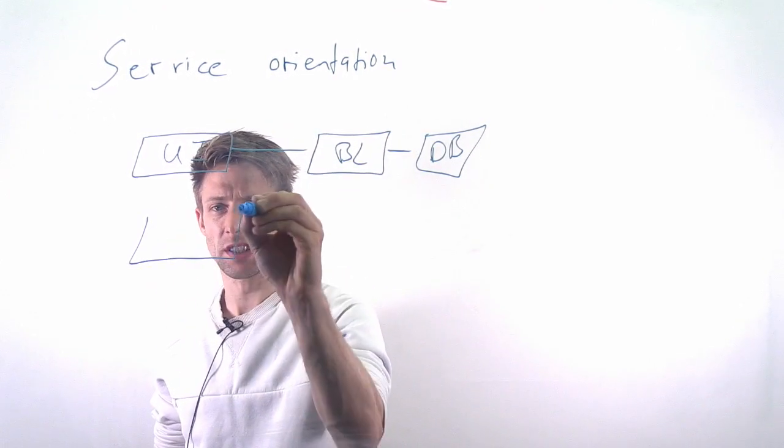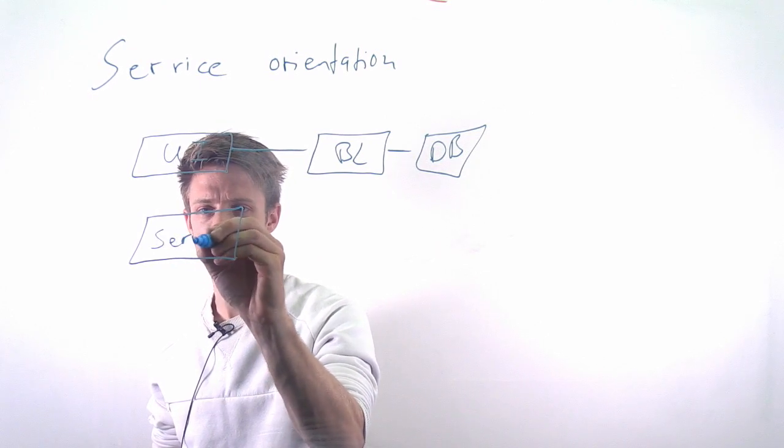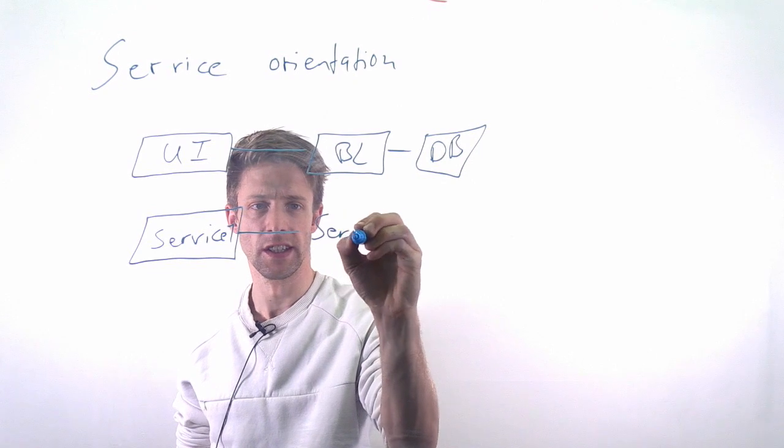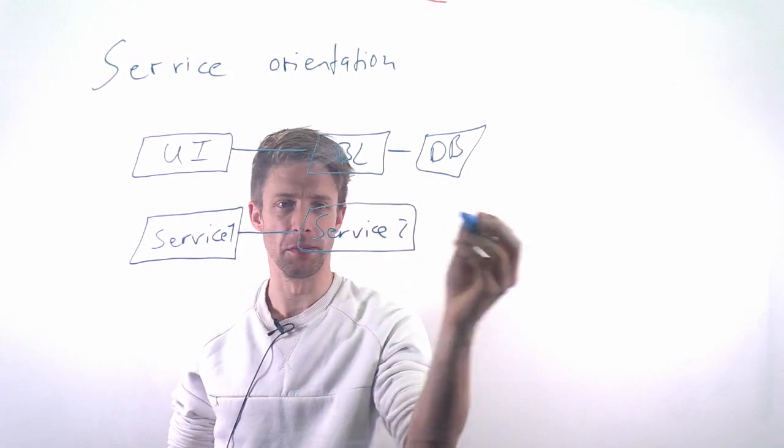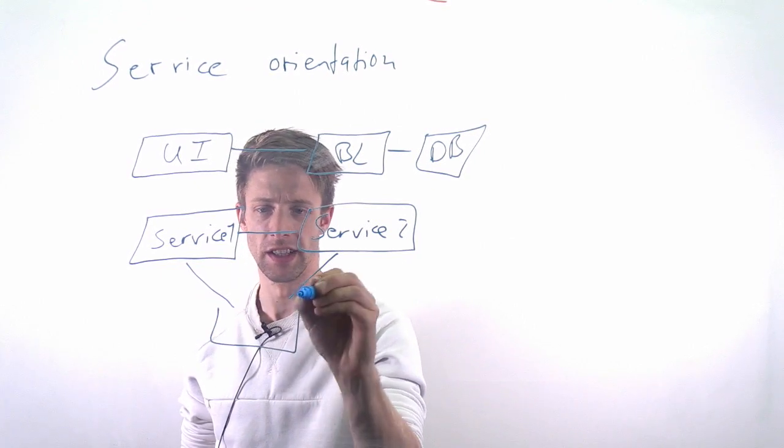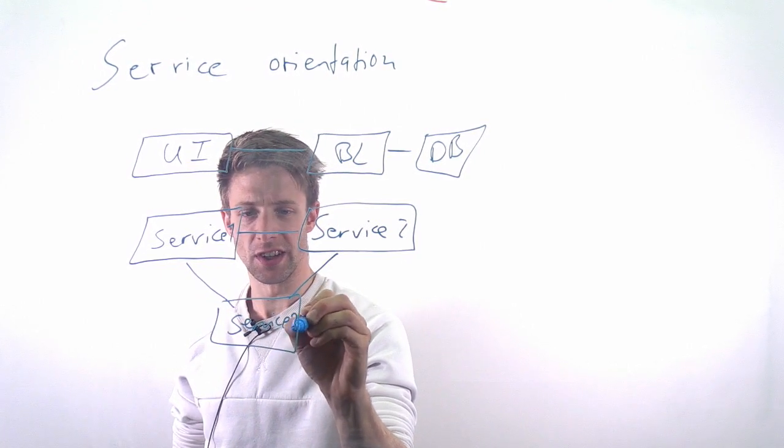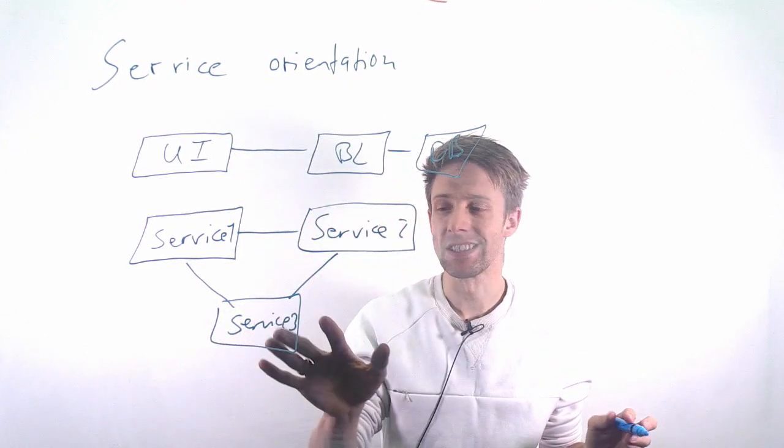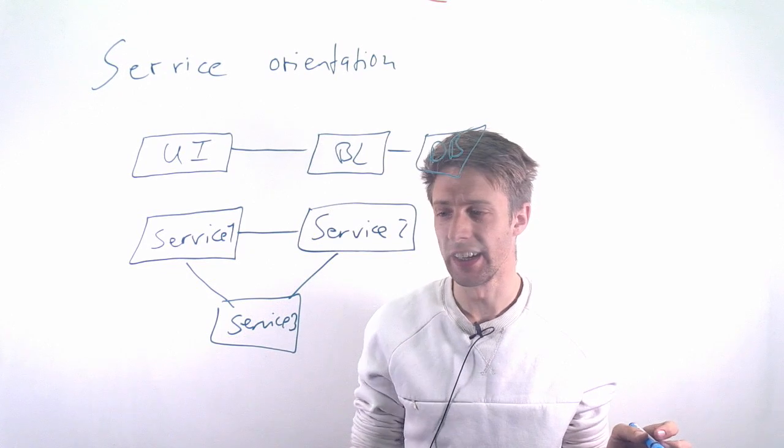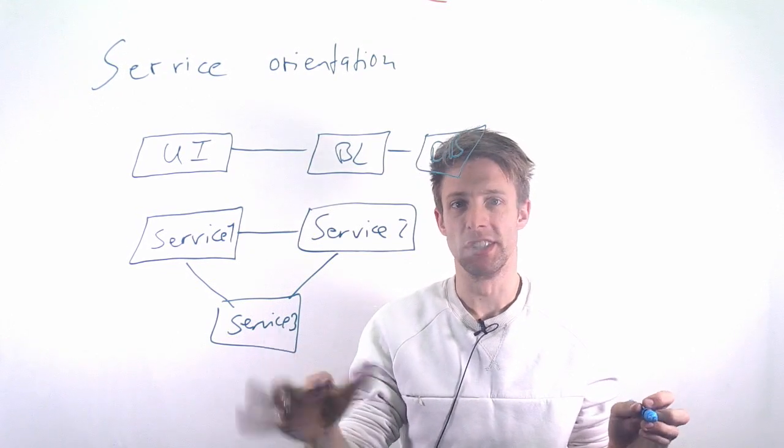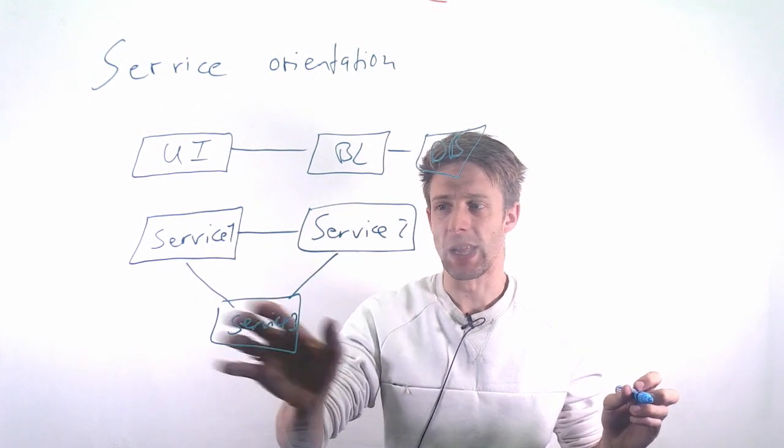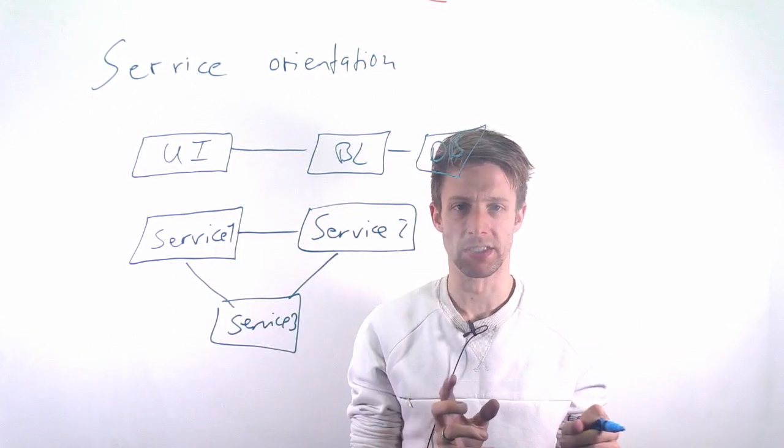Instead of that, we structure our system according to services. We have one service and then another service, and of course they don't have to be layered; they can be structured in any kind of way. The idea of a service is that it is something independent of the product you are offering and that it provides some kind of capability, some kind of value. Then your overall application is just taking different services and putting them together.